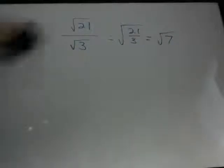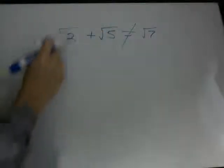You can't necessarily do that with addition. So we can't say that the square root of 2 plus the square root of 5 equals the square root of 7. You can't add two numbers under the square root sign and get that — this is not right. So don't do it with addition or subtraction, only multiplication and division.